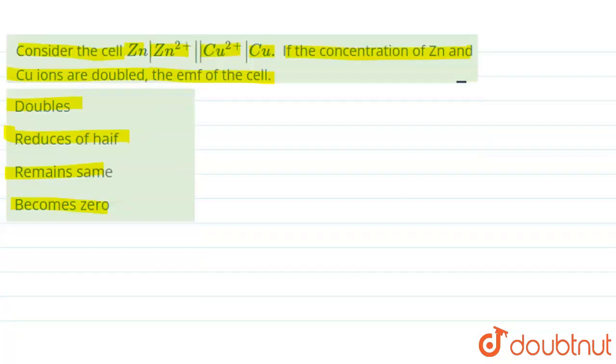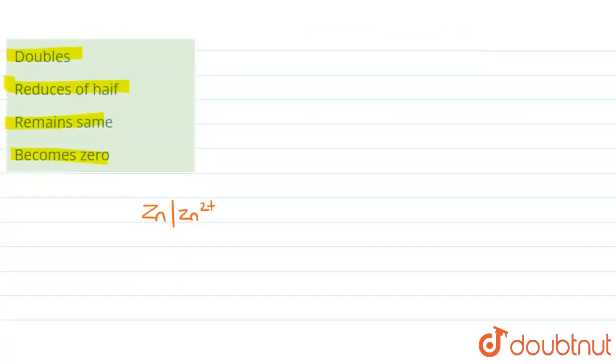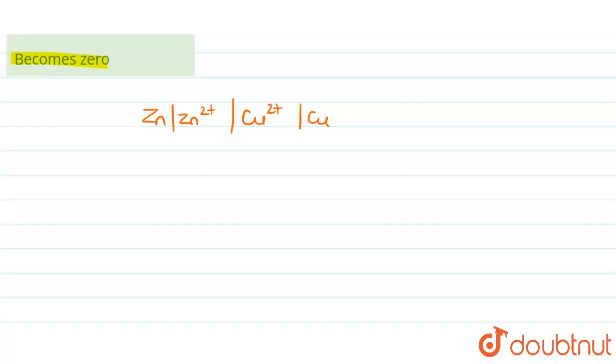So over here we have been given Zn, Zn2+, and then we have got Cu2+, and then Cu. So in this case what happens, this is the anode compartment and this is the cathode compartment.